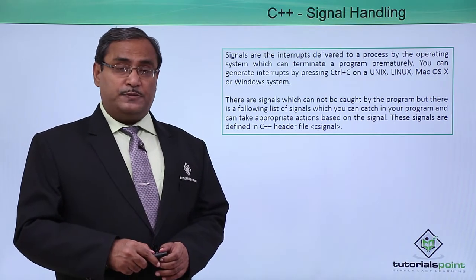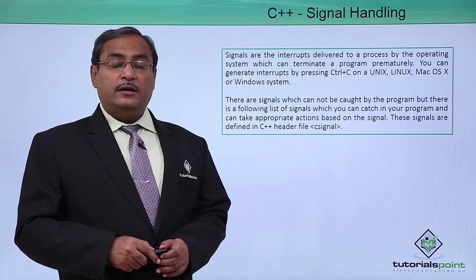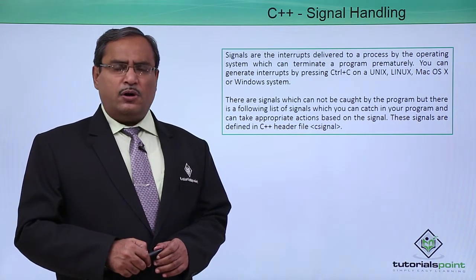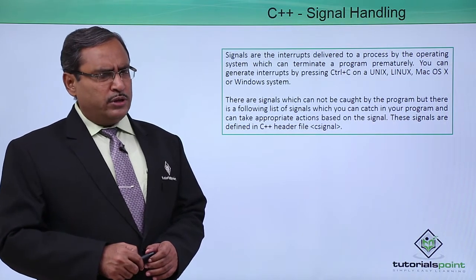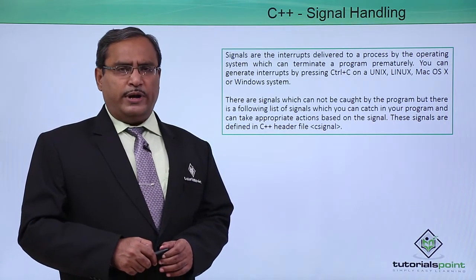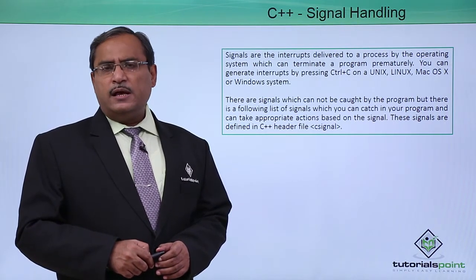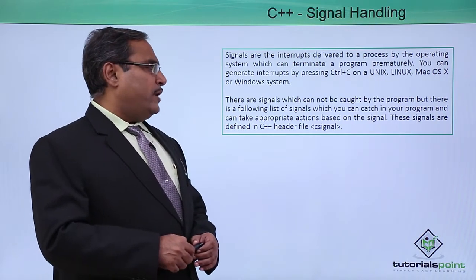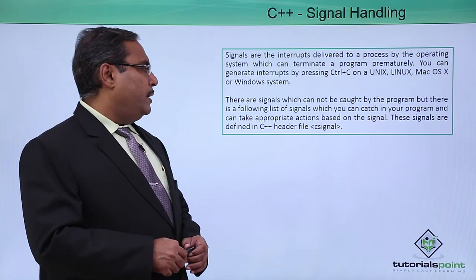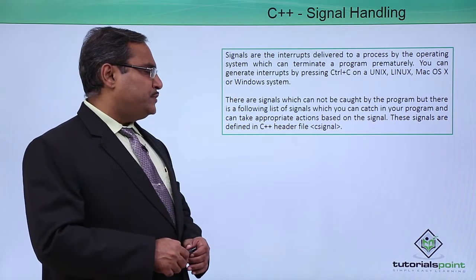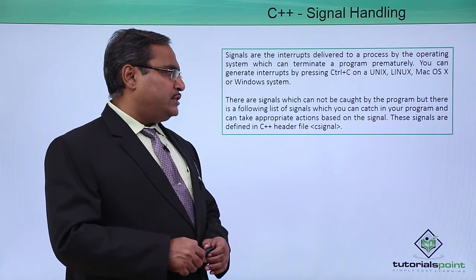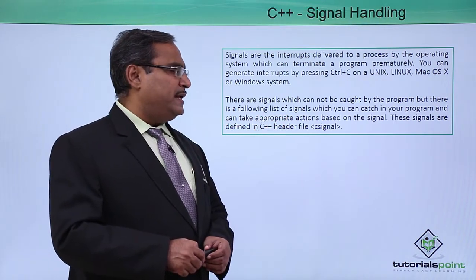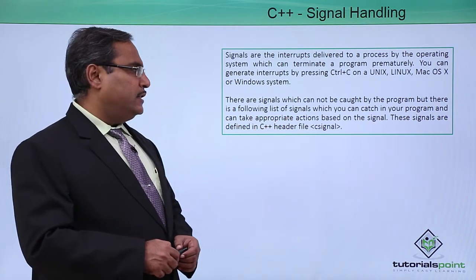These interrupts are known as signals, and in operating systems like Unix, Linux, Mac OS X, or Windows, the very common way to generate a signal is pressing Control+C. There are signals which cannot be caught by the program, but there is a following list of signals which you can catch in a program and take appropriate actions based on the type of signal generated.